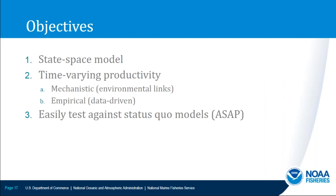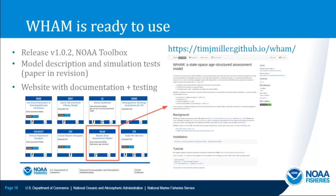The main objectives for WAM in the Northeast are to develop it as a state-based model, and to allow time-varying productivity via two approaches: mechanistic with environmental links directly on productivity parameters, and empirical or statistical allowing time variation without environmental links. All in one framework so models can be easily compared. Tim and I are pleased to announce WAM is ready to use — version one has been released on the NOAA Fisheries Toolbox. A paper in revision has more details on model description and simulation tests for five stocks, hopefully out in the next month or two.